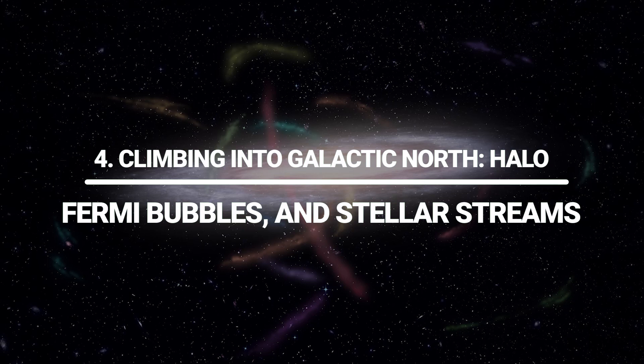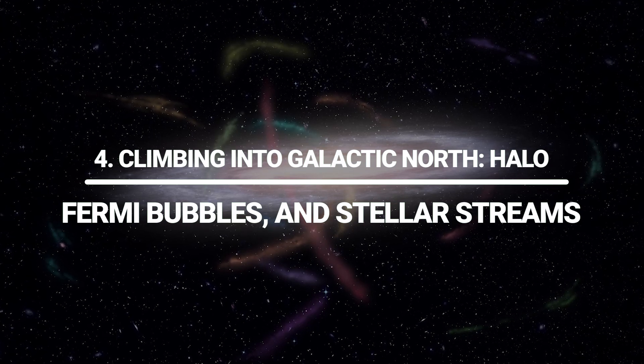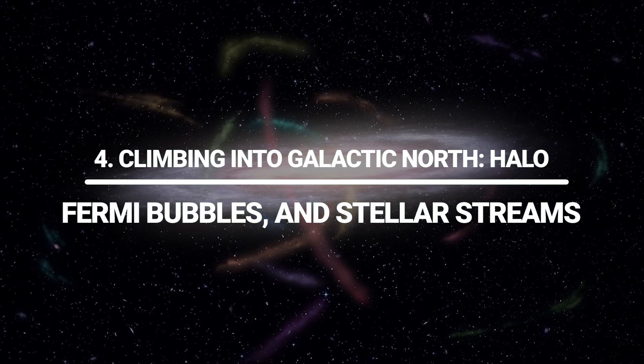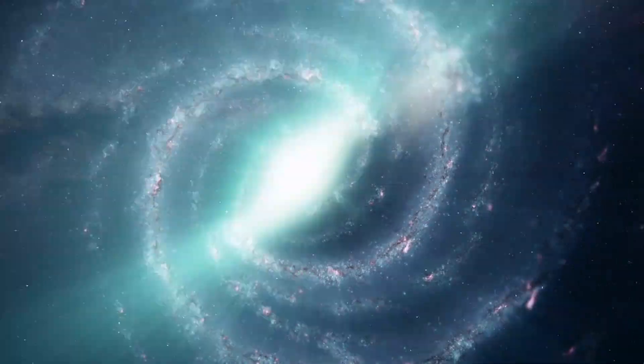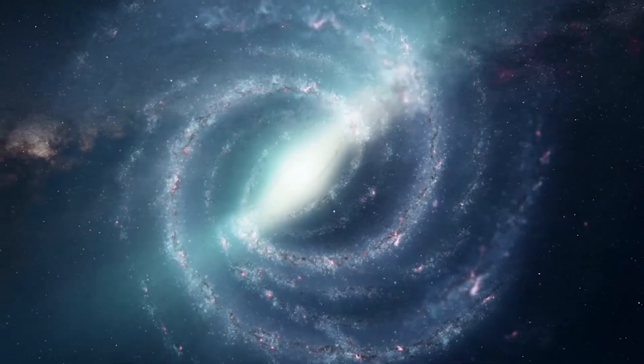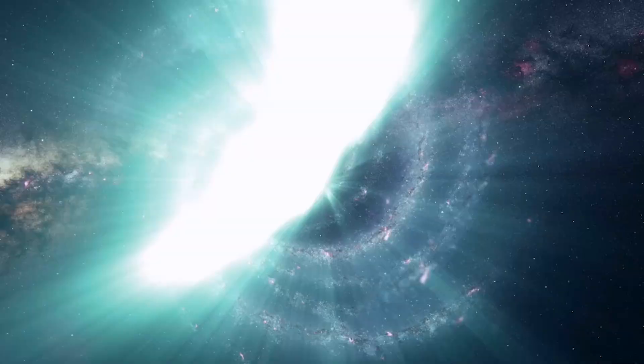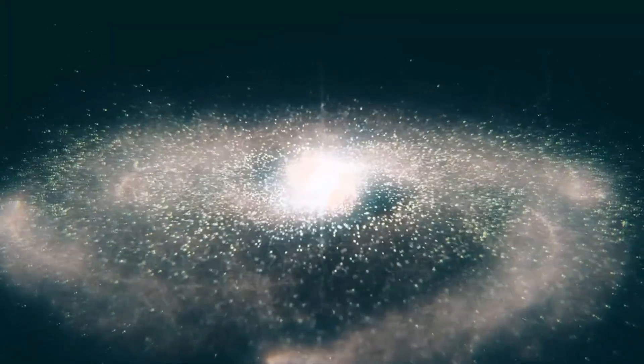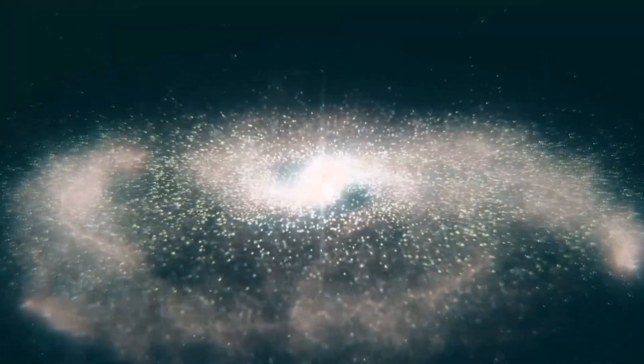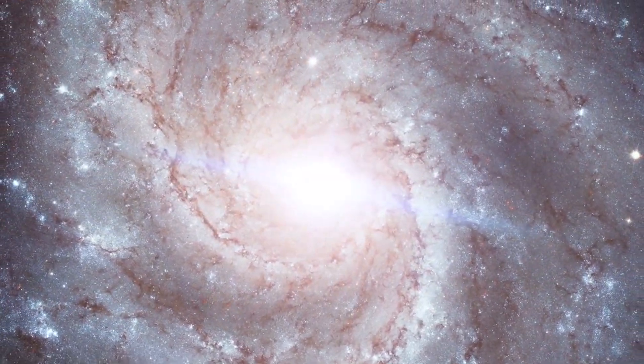Climbing into galactic north. Halo. Fermi bubbles and stellar streams. Continue upward another 1,000 light-years, and the backdrop of bright stars thins. You're entering the Milky Way's thick disk, then its halo, a nearly spherical swarm of old, metal-poor stars orbiting at crazy inclinations.